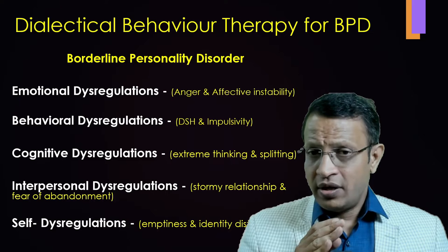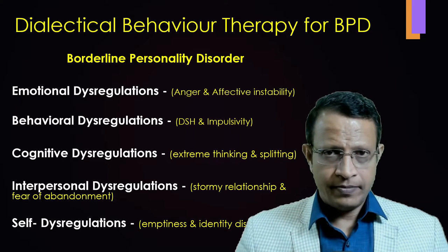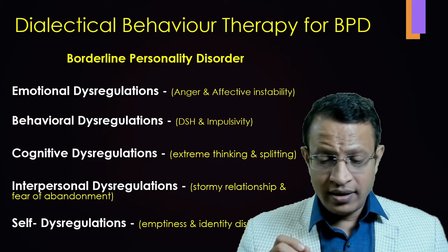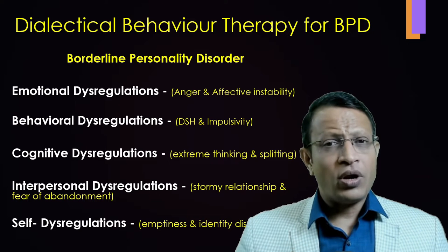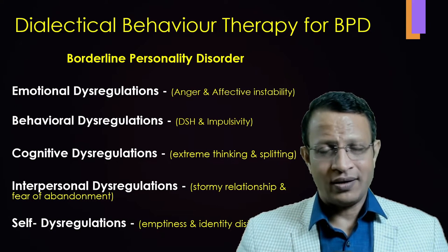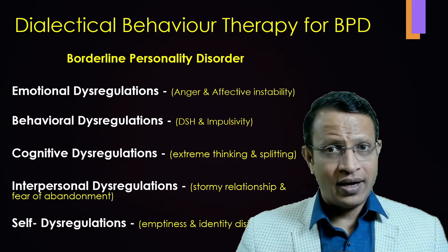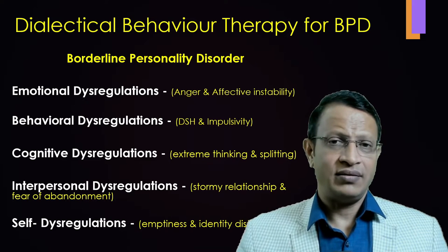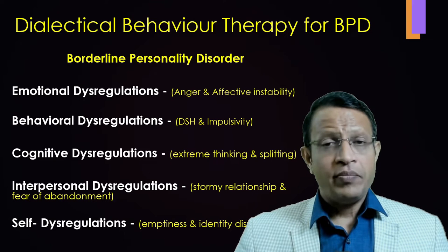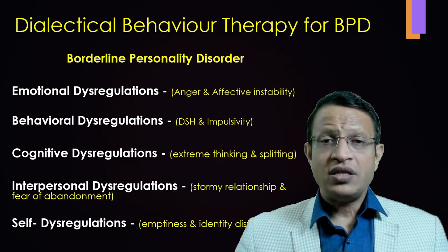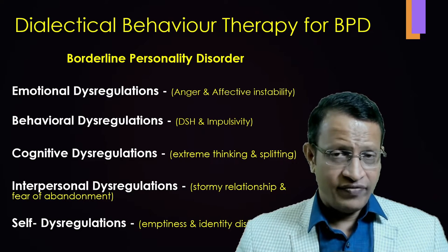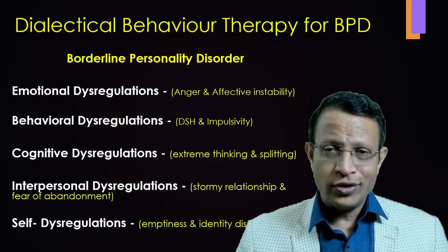The evolution from CBT to DBT is easy to understand if you remember the symptoms of borderline personality disorder. The domains include emotional dysregulation — extreme anger and affective instability — in which CBT does not work. The simple reason is that the amygdala is hyperactive and has hijacked the prefrontal cortex, the thinking center. When this occurs, you cannot think at all, so CBT will not be helpful. Because of the highly emotional nature, behavioral dysregulation is very high, including deliberate self-harm, suicidal attempts, and high impulsivity. Since the thinking process is disrupted, cognitive dysregulation and splitting will be present.